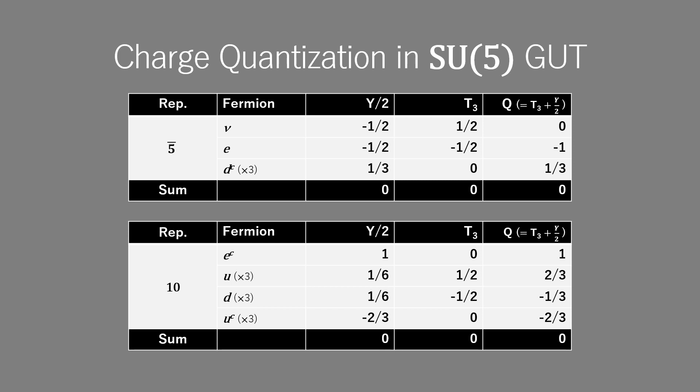The 15 fundamental fermions can be assigned to 5 and 10, which are representations of minimum dimension in SU(5). If we assign two of the SU(5) generators to hypercharge Y of U(1) and T₃ of SU(2), both of them are traceless and hence, the electric charge Q should be traceless too.